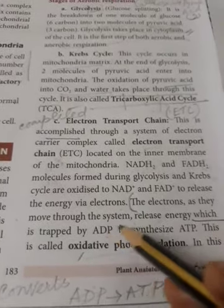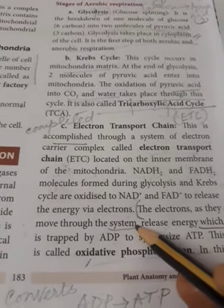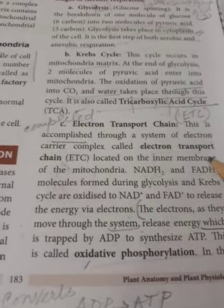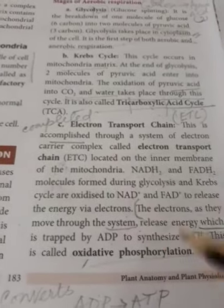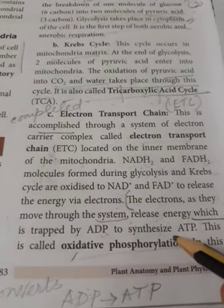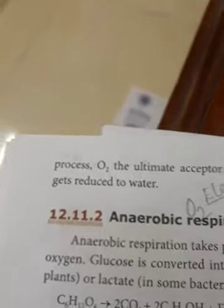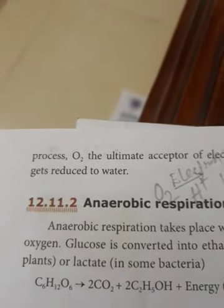In oxidative phosphorylation, electrons move through the electron carrier complex system, releasing energy trapped by ADP to synthesize ATP. In this process, oxygen is the ultimate acceptor of electrons, and oxygen is reduced to form water.